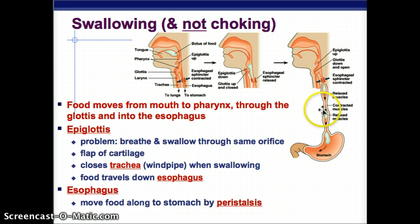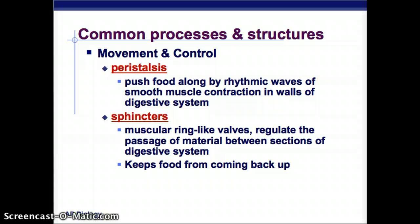Peristalsis is a wave-like contraction — it contracts and pushes, contracts and pushes, in a wave-like motion. We'll show you more detail in class. Peristalsis consists of rhythmic waves of muscle contraction that push food along. There are also sphincters — muscular ring-like valves that regulate the passage of material. They keep food from coming back up: once food has gone through, the sphincter closes so the food won't travel back up.